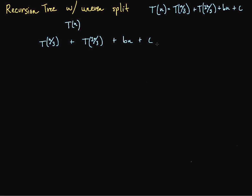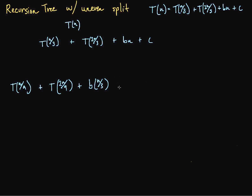Now, what do we do from here? All we really need to do is make sure that we stick with one of these at a time. So for space, I'm going to do this one way down here. What is T(n/3)? Well, that would just be plugging n/3 into the recurrence. And what do we get? T(n/9) plus T(2n/9), plus b times n/3, plus c.